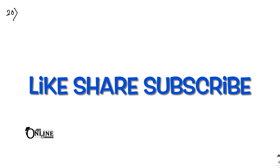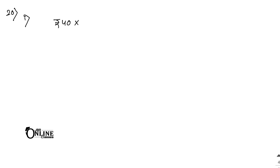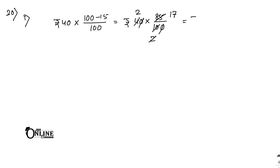Sum number 20: in a sale, a shop reduces all its prices by 15 percent. Part 1: find the cost of an article originally priced at rupees 40. Reduced by 15 percent means 100 minus 15 by 100. Present price equals 40 into 85 by 100. Simplifying: 85 by 5 equals 17, and 40 by 2 equals 2, so the answer is 17 into 2 equals rupees 34.